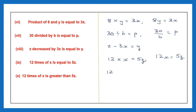Question 10: 12 times of x — multiplication — is greater than 5z. So put the greater than sign: 12x is greater than 5z.